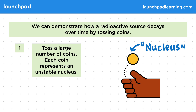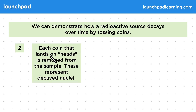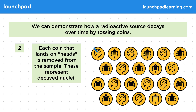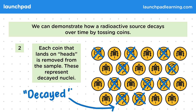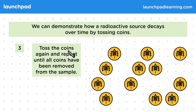The more coins used, the more accurate the result, but the longer the experiment will take. Each coin that lands on heads is removed from the sample — these represent decayed nuclei. Here is the result of tossing all of our coins, and these are the nuclei that have decayed.